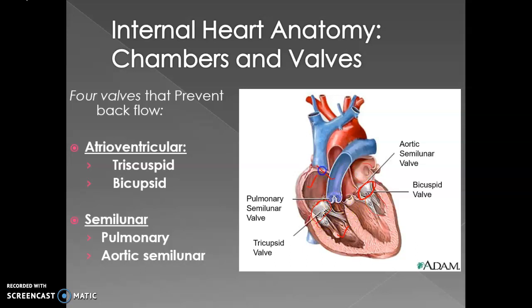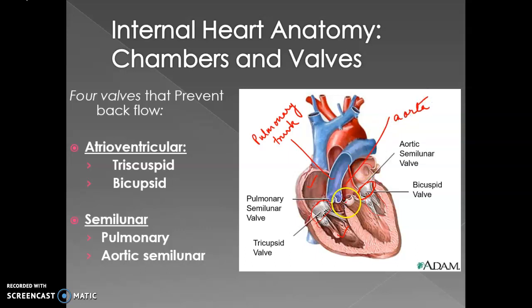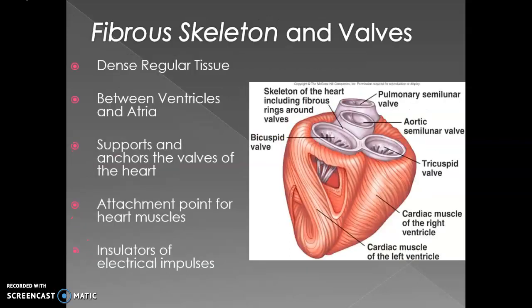At the base of the pulmonary trunk we have the pulmonary semilunar valve, and at the base of the aorta we have the aortic semilunar valve. As the pulmonary valve opens, blood is pushed into the pulmonary trunk and ultimately travels to the pulmonary arteries and the lungs. As the aortic semilunar valve opens, blood is driven into the aorta and distributed throughout the body.